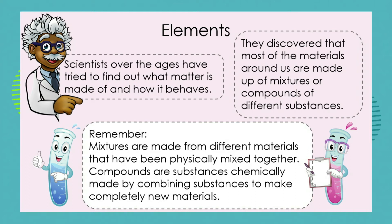Over time, scientists have tried to find out: what is this matter? What is it made of? I can see my pen — it's made of metal and there's a little bit of plastic on it. But what is that plastic made up of? What is the metal made up of? If I took this metal and broke it down smaller and smaller, what is the smallest particle of that metal that I would discover?